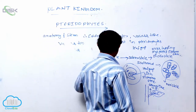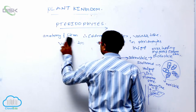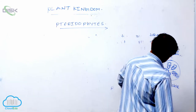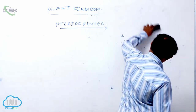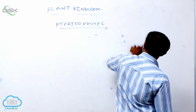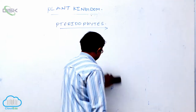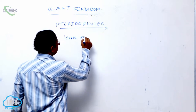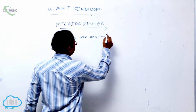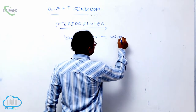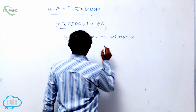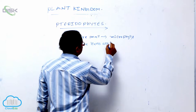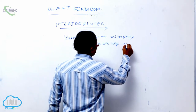In Pteridophyta, leaves are small — they are known as microphylls. Some leaves are large — they are known as macrophylls.